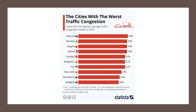Another good example would be traffic congestion. Here's a survey from the TomTom Traffic Index showing the cities in the world with the highest average traffic congestion levels in 2020. Moscow came top, followed by Mumbai, Bogotá, and Istanbul — many of these fast-growing emerging market countries with very quickly growing populations facing a huge congestion issue.